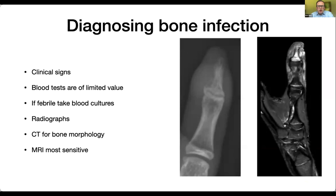We'd always get radiographs. For the first two to three days, plain x-rays can be unremarkable. At about a week after the start of the infection, you can start to see osteopenia, bone destruction, little breaches within the cortices, and some periosteal reaction. At about 10 to 14 days, you can start to see sequestra forming, and often you can see some generalised osteopenia due to disuse of the bone.